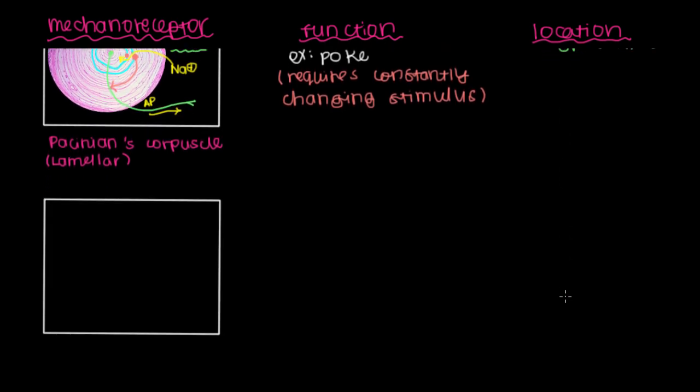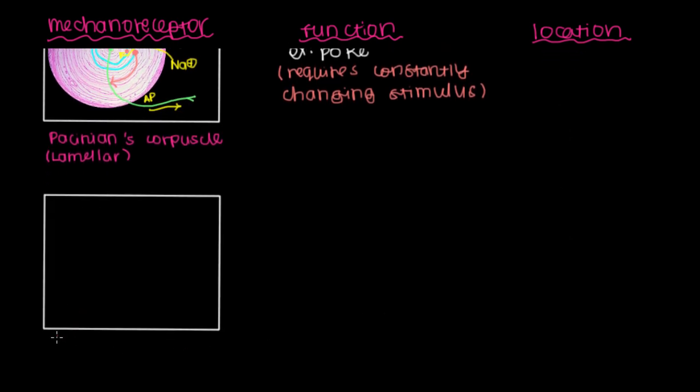And as we move further along, we can talk about the next mechanoreceptor that is called Merkel's disc. So Merkel's disc. We've been talking about corpuscles all this time, but now we'll just talk about a single disc. And our stimulus will be the same if we have some type of external force right here that kind of pushes and transmits this force deep within our skin, we'll have Merkel's disc respond.